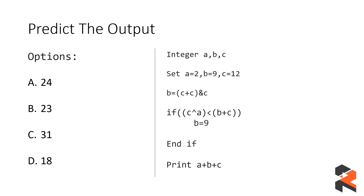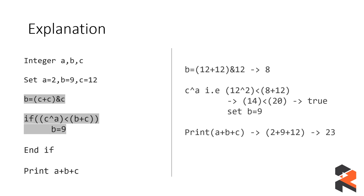Then we have an if condition inside which there is an XOR operation between c and a, being compared to an addition of b and c. Let's look at it step by step. The answer will be 23 — let's understand how. First, brackets need to be solved: c + c evaluates to 12 + 12 = 24.